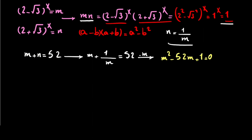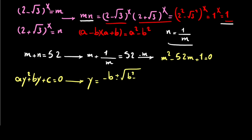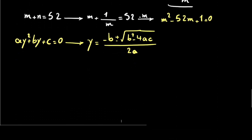In one of my videos I proved that if you have a quadratic equation ay squared plus by plus c equals 0, where a is not equal to 0, then y equals negative b plus or minus the square root of b squared minus 4ac, divided by 2a. I proved it in a previous video and put the link in the description — if you don't know it, you can check.